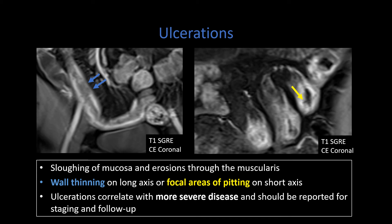Other manifestations of active inflammation include ulcerations. Ulcerations occur when there is sloughing of the mucosa and erosions that may not be transmural or penetrating disease, but are an early manifestation of transmural inflammation that could eventually lead to penetrating disease. You lose the mucosa, may see focal areas of wall thinning superimposed on areas of wall thickening, and may even see small pits within those areas of active inflammation. Ulcerations correlate with very severe disease and are helpful to mention in your report to help clinicians understand disease severity.